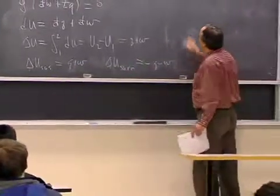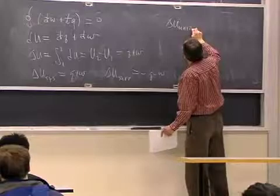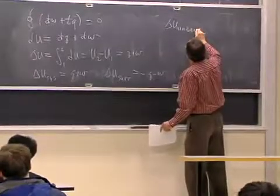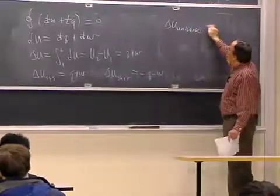And then we can write dU for the universe, which is system plus surroundings, is equal to zero.